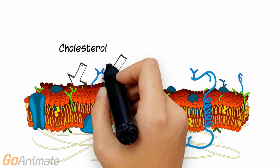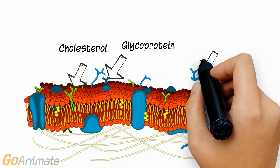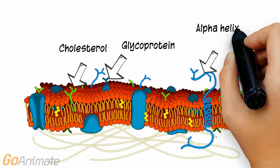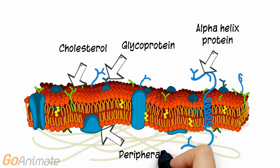Cholesterol is embedded in the cell membrane and gives it support. Other proteins include glycoproteins, alpha-helix proteins, and peripheral proteins that do not extend all the way through the membrane.